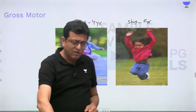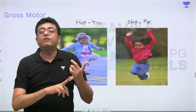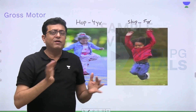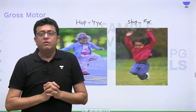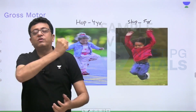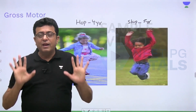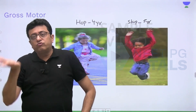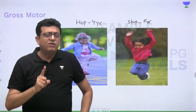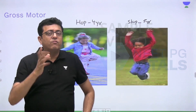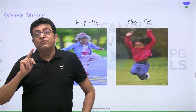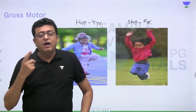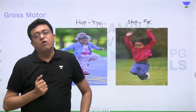Now you know the meaning of every milestone: crawling, creeping, up stairs, down stairs with single step, hopping, and skipping. Let's do a final recap: three months neck holding; five months sitting with support; six months prone to supine and supine to prone; eight months sitting without support; nine months crawling; ten months creeping; eleven months walk with support; twelve months walk independently; two years run well, kick a ball, up and down stairs with two steps; three years ride a tricycle and up stairs single step; four years down stairs single step and hopping; five years skipping.